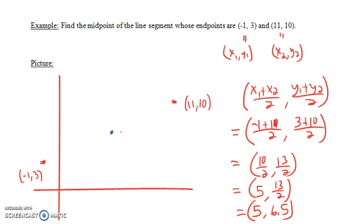And you can look at the point here. It seems reasonable that this point would have coordinates (5, 6.5). All right, so that's how you find the midpoint between two points.